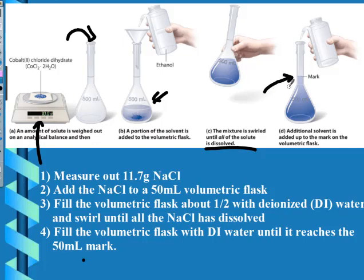Every volumetric flask has one reading. A 50 milliliter volumetric flask will only measure 50 mL, and a 500 milliliter volumetric flask will only measure 500 milliliters. If you need an odd volume such as 45 or 35 milliliters, you would need to use a graduated cylinder instead of a volumetric flask.